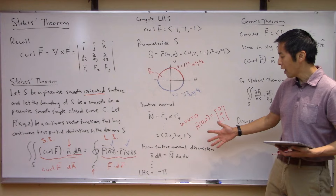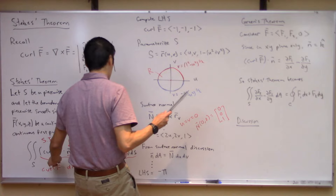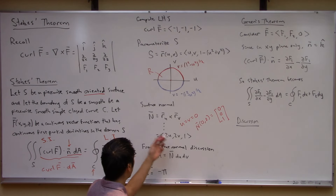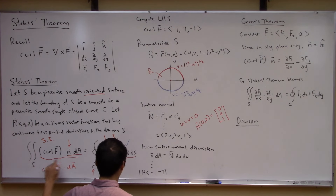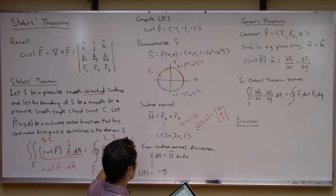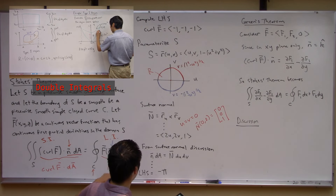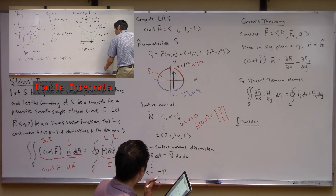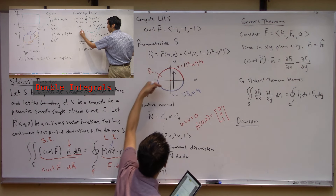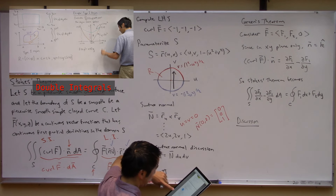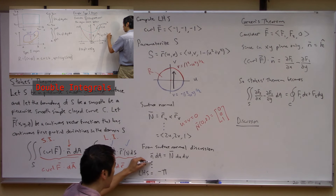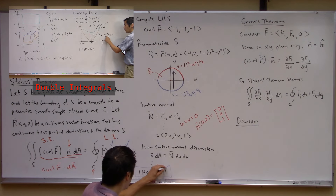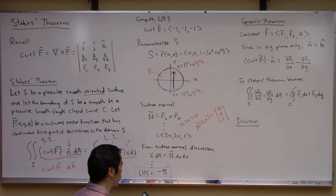At this point, we have everything we need: the curl of F, and the surface normal expression — so that N dA term is just this. It's now a double integral over this region R. Referring back to our discussion on double integrals, we treat this as a type one region, first integrating over DV with V running from the lower to upper bounds, then integrating U from minus one to positive one. The detailed setup is in the notes. At the end of the day, we end up with the exact same answer — negative pi. So we verify that Stokes' theorem holds for this particular situation.